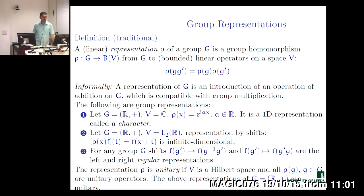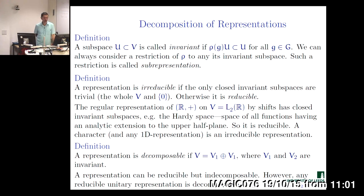So, a group of real numbers with addition. Clearly there is a one-dimensional unitary representation by characters — one-dimensional multiplication by unimodular complex numbers associated to this real number. This is example one. Then there is example two, where our group acts by a shift in L² spaces on square integrable functions. This is again a unitary representation. The norm of the function is not changed because the Lebesgue norm is invariant under the shift.